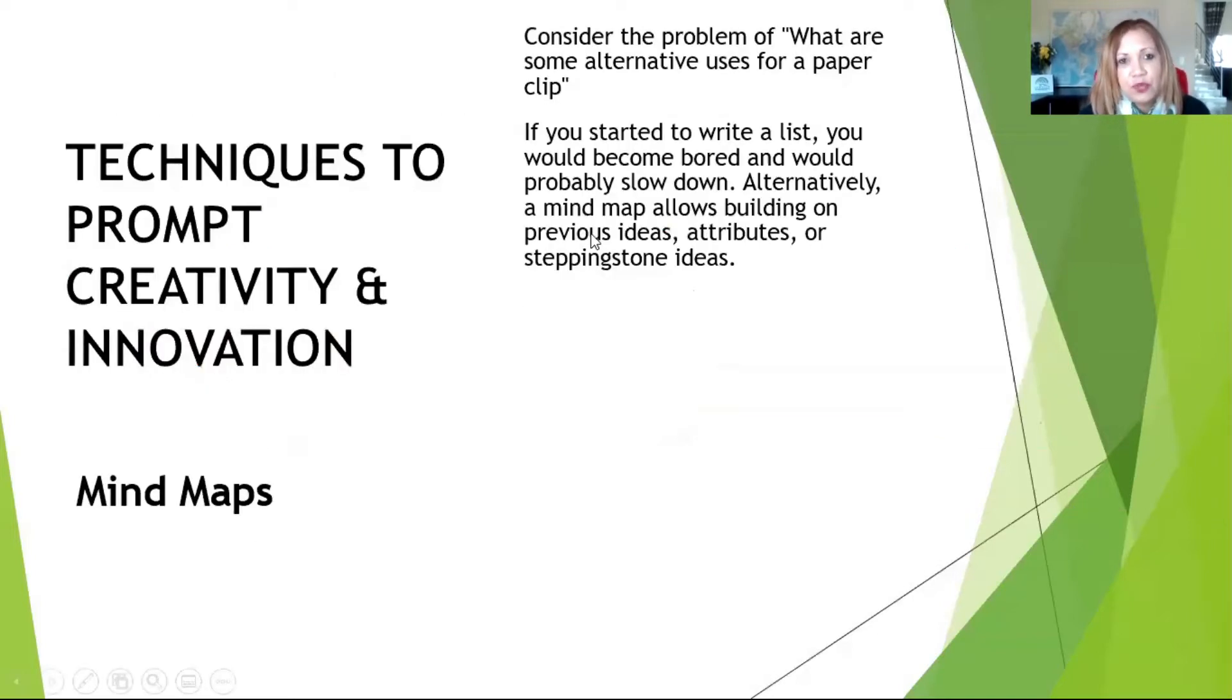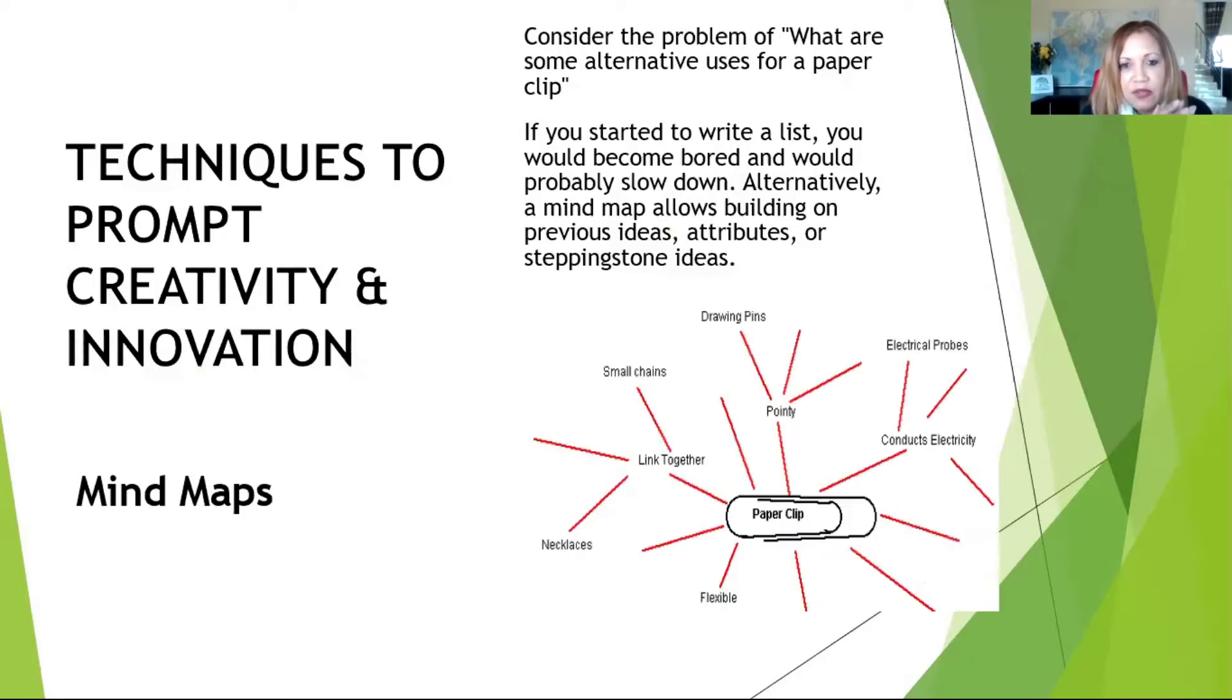Let's look at the first one. If you were faced with a problem stating that what are some of the alternative uses for a paperclip, if you had to start writing a list, you could become bored or you'd probably slow down. Alternatively, you can use a mind map which allows building on previous ideas, attributes or stepping stones. So let's look at the paperclip. What could you be using it for?